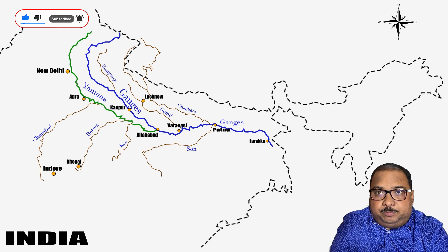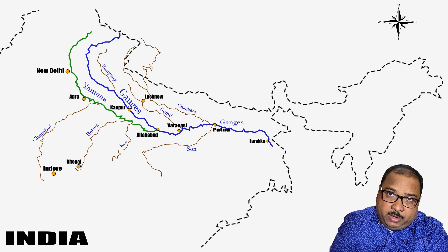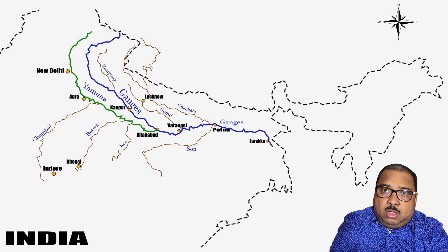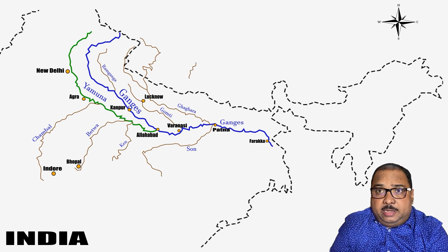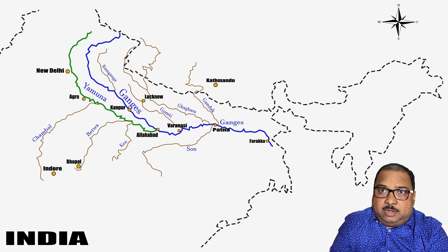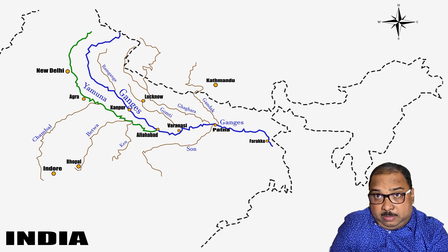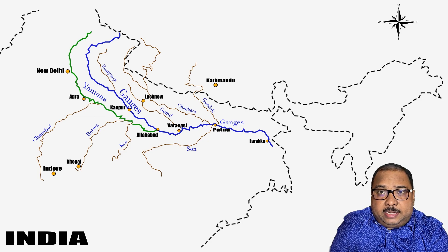Ghaghra river is also very important. It emerges after the meeting of two rivers, Kali and Karnali, both of which originate from Nepal. The Kali river in Nepal is known as Sharda river in India. When the Sharda river meets the Ghaghra, the combined stream is also known as Ghaghra. The Karnali river in Nepal is known as Ghaghra in India. This Ghaghra river meets Ganga in the state of Bihar. Gandak river is the longest flowing river in Nepal; it then enters India and meets Ganga in the state of Bihar.